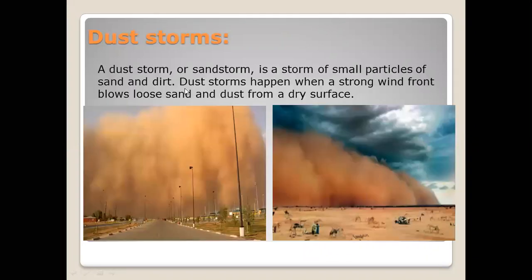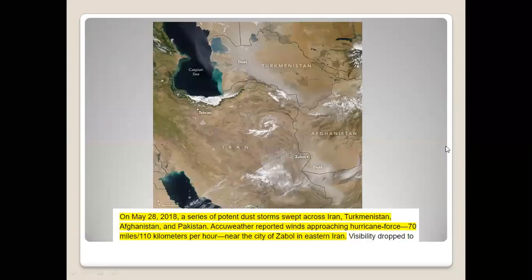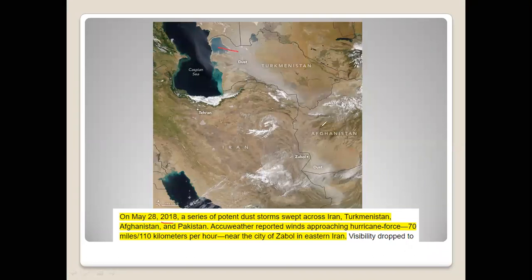Dust storms are storms of small particles of sand and dirt. A dust storm happens when a strong wind blows over loose sand. Let's discuss dust storms from history. Here is a map — you can see dust storms in 2018 in Turkmenistan, Afghanistan, and Pakistan.